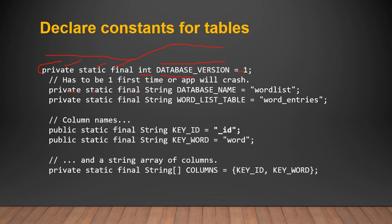Create private, static, final string database name. Inside the double quotes, write your database name and pass its extension like .db. If you do not pass the .db extension, the SQLite Open Helper will do this for you. After that, create the table name, which is word entry.